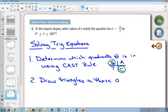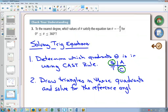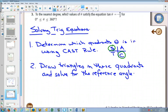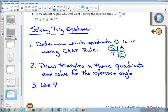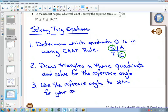We're going to then draw triangles in these quadrants, and then we're going to solve for the reference angle. As you get better at these, you don't have to necessarily draw the triangles every time. You can go directly to solving for the reference angle. But again, at the beginning, having drawn this is really going to help you understand what's going on. And then once you have your reference angle,